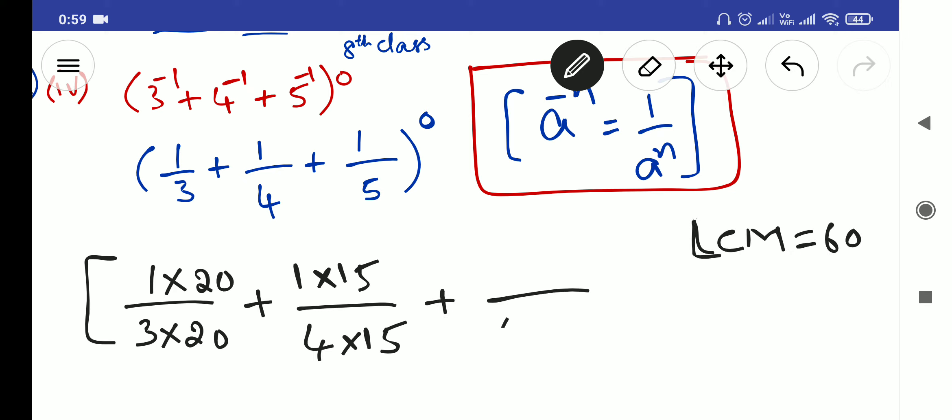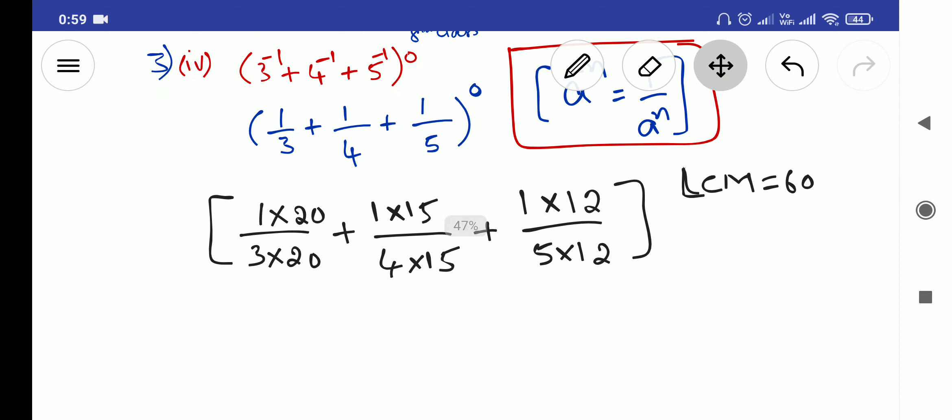Plus here 5, 5 into 12 and 1 into 12. Why I am multiplying it? Because LCM will have to make the denominator equal to LCM value, so numerator also will have to multiply the same number without changing the fraction. So it will become 20 by 60 plus 15 by 60 plus 12 by 60.